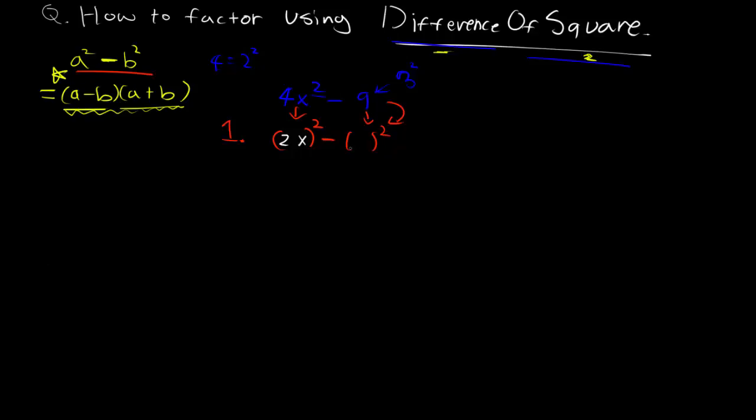So notice this form right here looks just like this formula. Which means we can define that a is equal to 2x and b is equal to 3. You don't count the negative sign for the 3 because the parenthesis is there. So we have a equals 2x, b equals 3, which means we can just use this form.